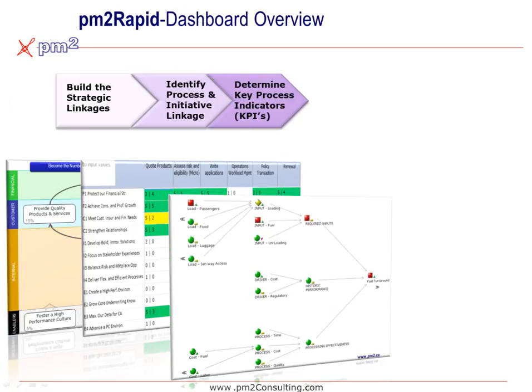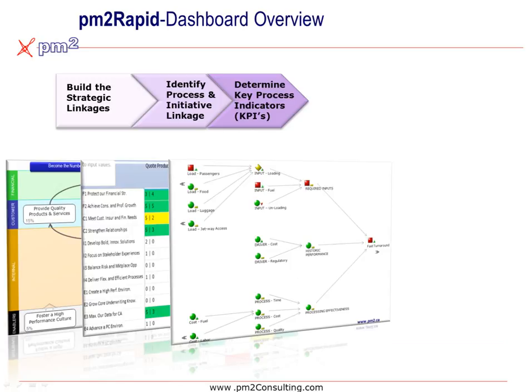Based on that, we can identify what are the key process indicators that are required to identify and monitor the key variation points in the process.